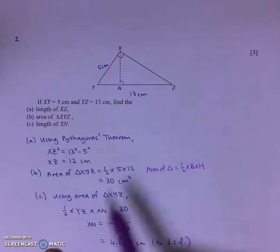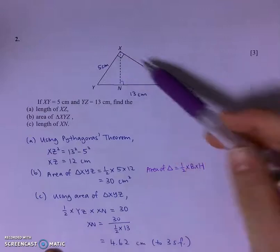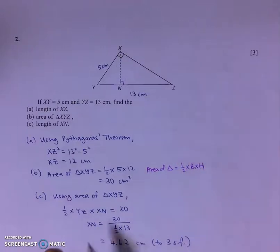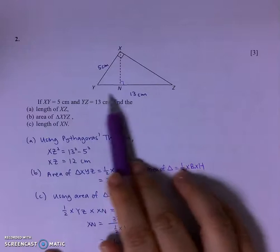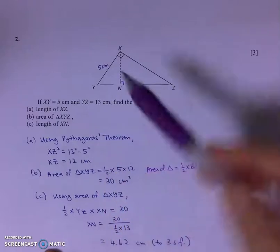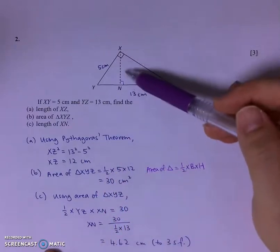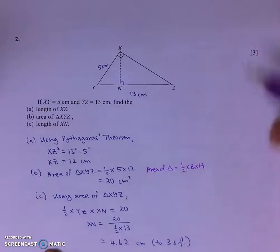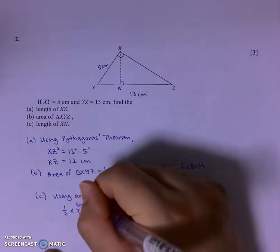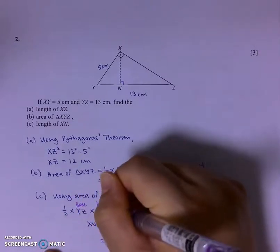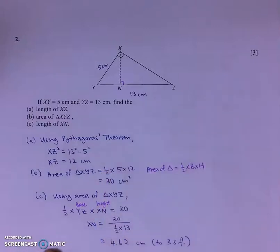But now, instead of using XY and XZ as the base and the height, I'm using XZ as the base and XN as the height. So it's my base, it's the height, to find the length of XN.